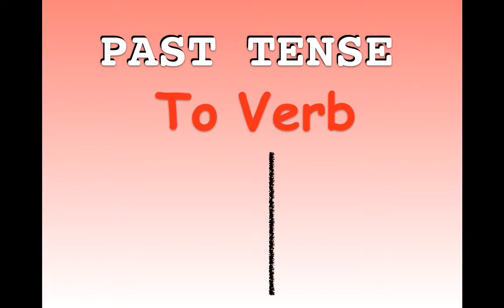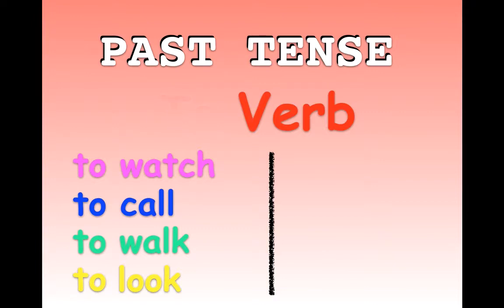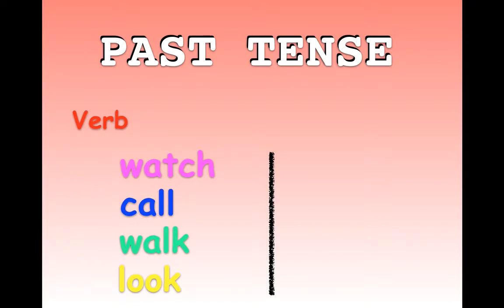We have two groups for this verb tense, but they are not the same as the present tense verbs from the previous video. Let's look at a couple of verbs: to watch, to call, to walk, to look. To start creating the past tense, the first step is to take away the 'to' from the infinitive, so I'm just left with the verb.